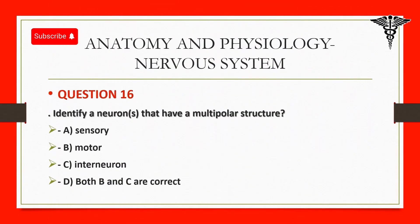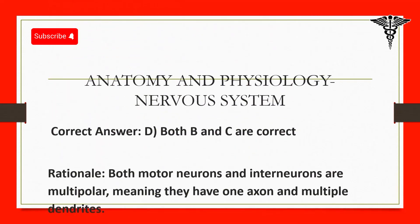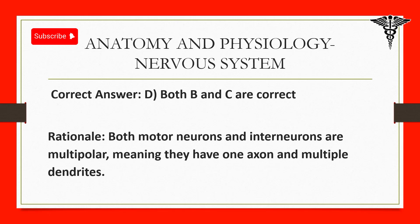Question 16: Identify neurons that have a multipolar structure. A. Sensory. B. Motor. C. Interneuron. D. Both B and C are correct. Correct answer: D. Both B and C are correct. Rationale: Both motor neurons and interneurons are multipolar, meaning they have one axon and multiple dendrites.